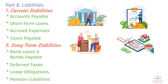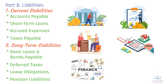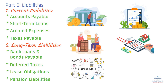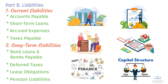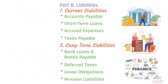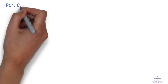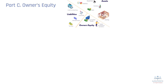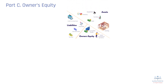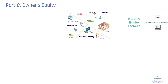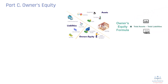A company's liability structure affects its financial risk. Too much debt can lead to financial distress, while a well-managed liability structure helps businesses grow sustainably. Part C: Owner's Equity. Owner's equity represents the value left over after subtracting all liabilities from assets. It reflects the stake that business owners or shareholders have in the company and shows the net worth of the business and how much value the owners have after all debts are settled.